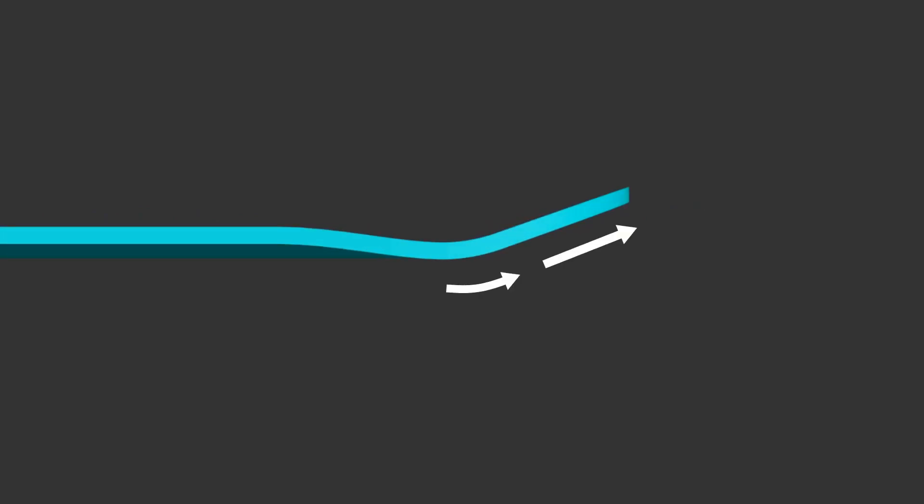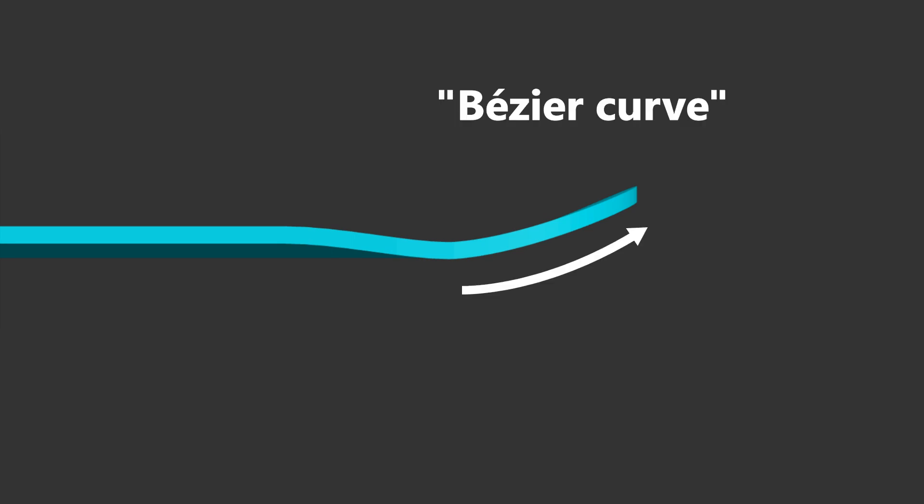In one way, the board bends along an arc until it reaches a specific angle, and then continues straight at that angle. This is called an angled kick. In the other way, the board's kick follows a more complex curve, like a bezier curve. This can provide continuous curvature through the kick, so that there essentially aren't any flat spots.